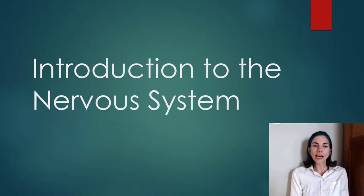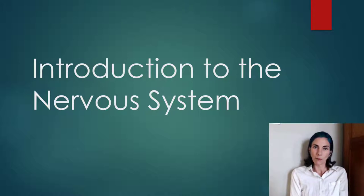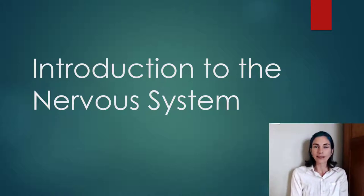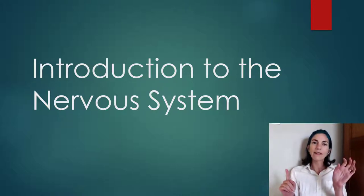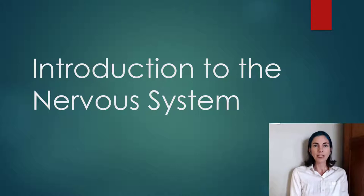Welcome to the introduction of the nervous system, produced specifically for human physiology. If you have already taken human anatomy, this is going to feel like a very simplified review — anatomy light. In physiology, we spend most of our time talking about how specialized cells called neurons conduct electrical signals down the length of the cell and how they communicate with another cell. In this mini lecture, we will cover the organization of the nervous system and introduce the cells that comprise it.